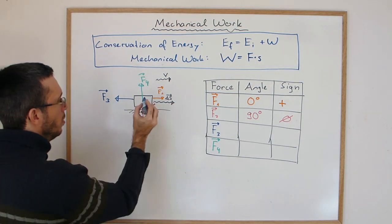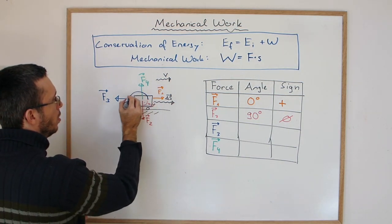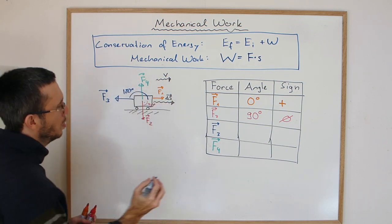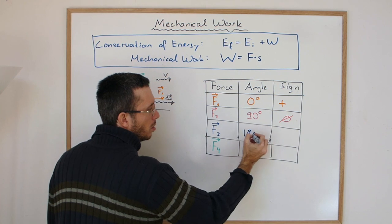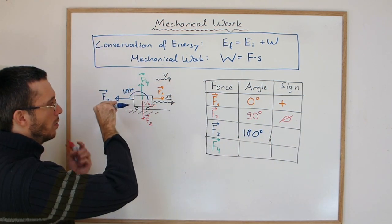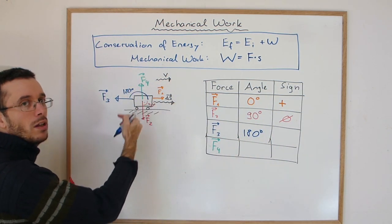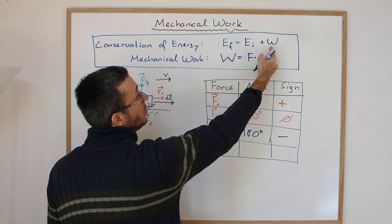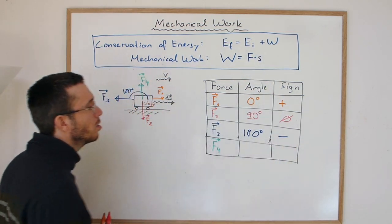Force three is at an angle of 180 degrees from the direction of travel of the cart. And if the cart is moving this way and you're pulling that way then you're slowing down the cart. So the change of energy must be negative, so then the sign should become negative.